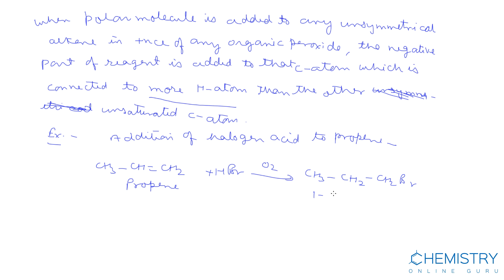So in this case we get 1-bromopropane. This reaction takes place in the presence of oxygen or benzoyl peroxide, and this effect is known as the Kharash effect, anti-Markovnikov rule, or peroxide effect.